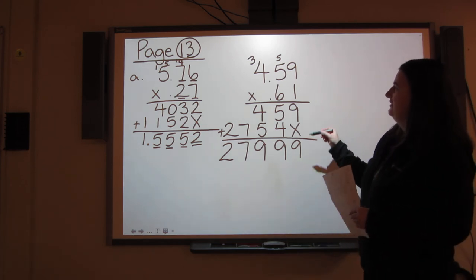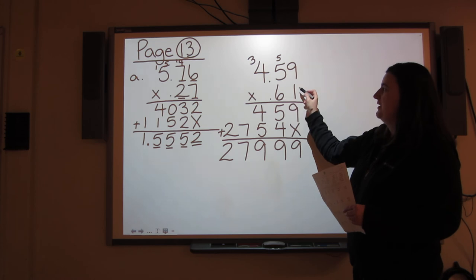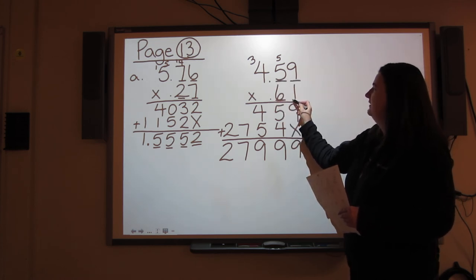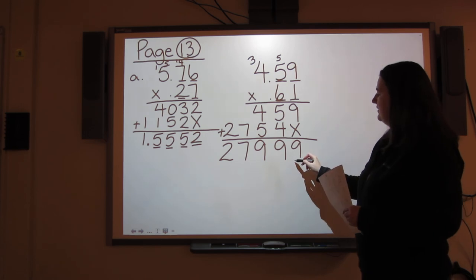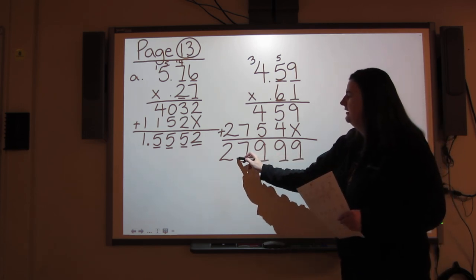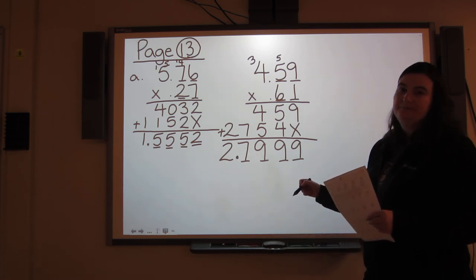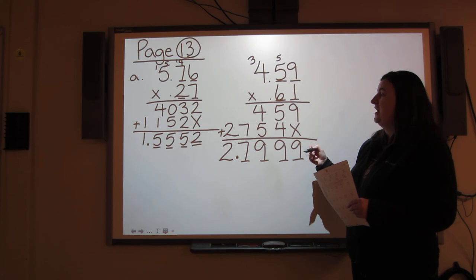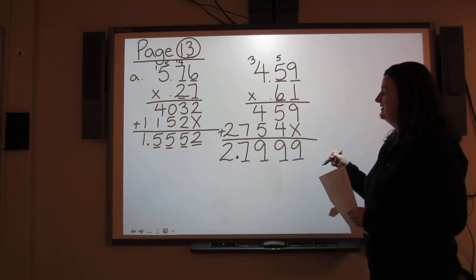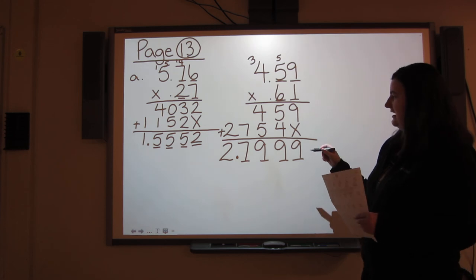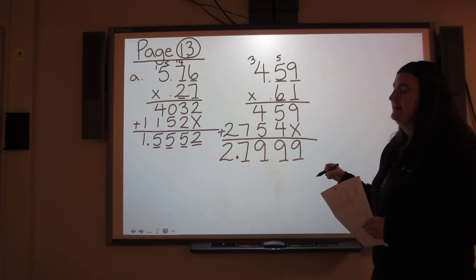I look back at my question and I count the decimal spots. I have 1, 2, 3, 4. So I'm going to have 1, 2, 3, 4 decimals. 4.59 times 0.61 is 2.7999.